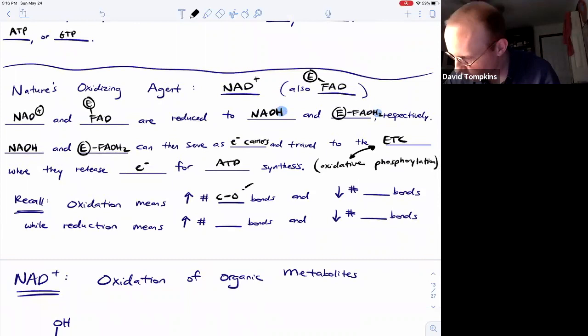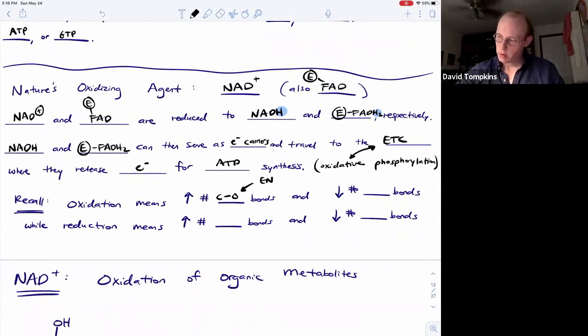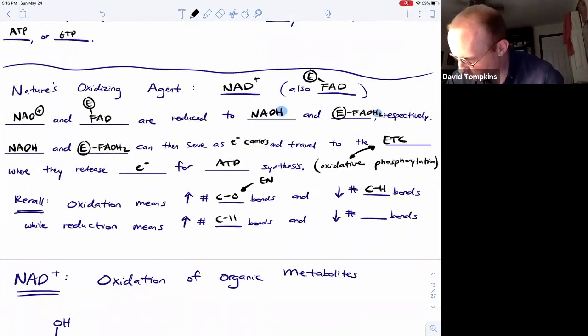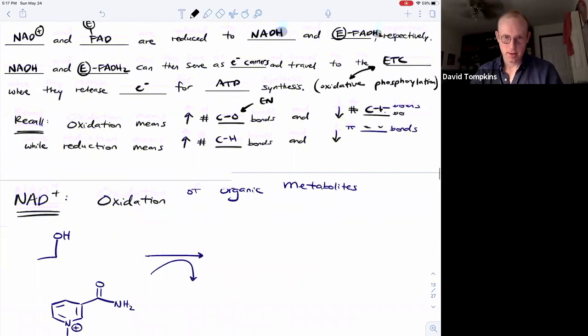So recall that oxidation means you're adding more C-O bonds, or any carbon bound to an electronegative atom is an oxidized carbon, or removing hydrogens from carbon. Alternatively, we can think of reduction as adding more hydrogens or decreasing the number of C-O bonds.